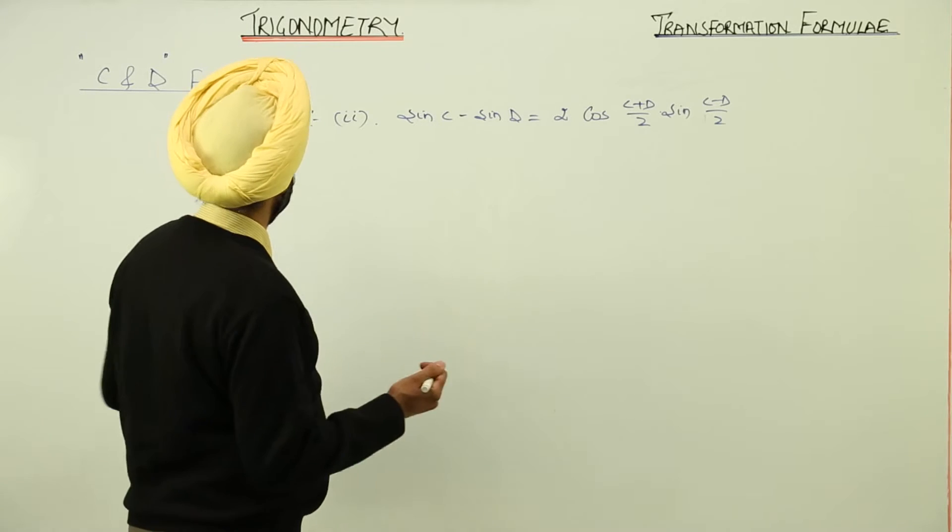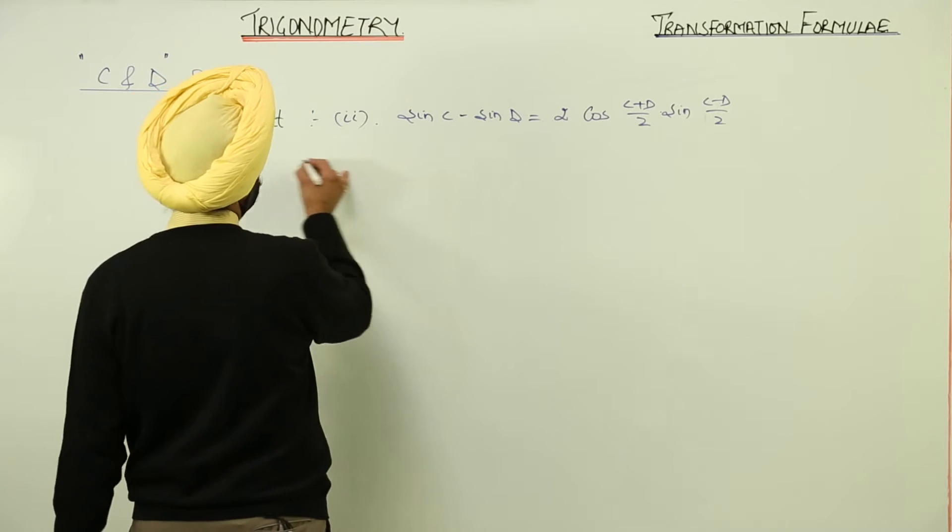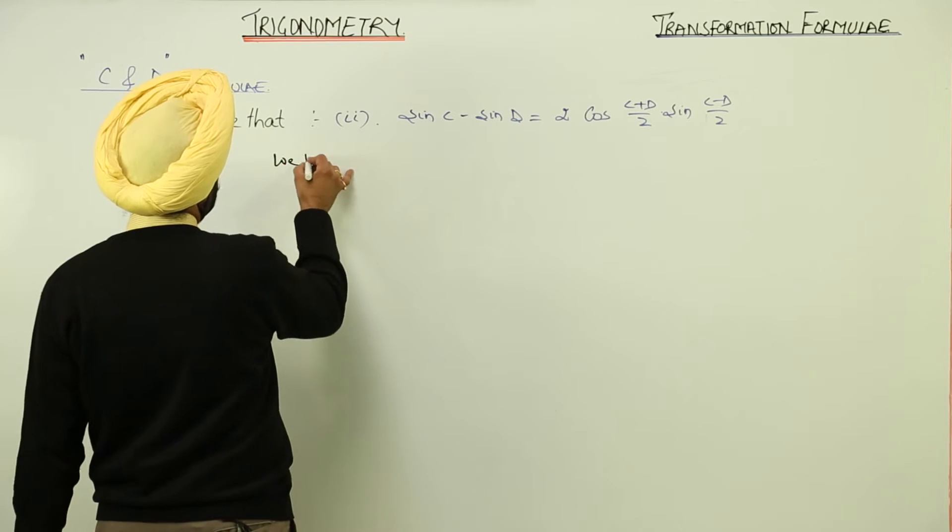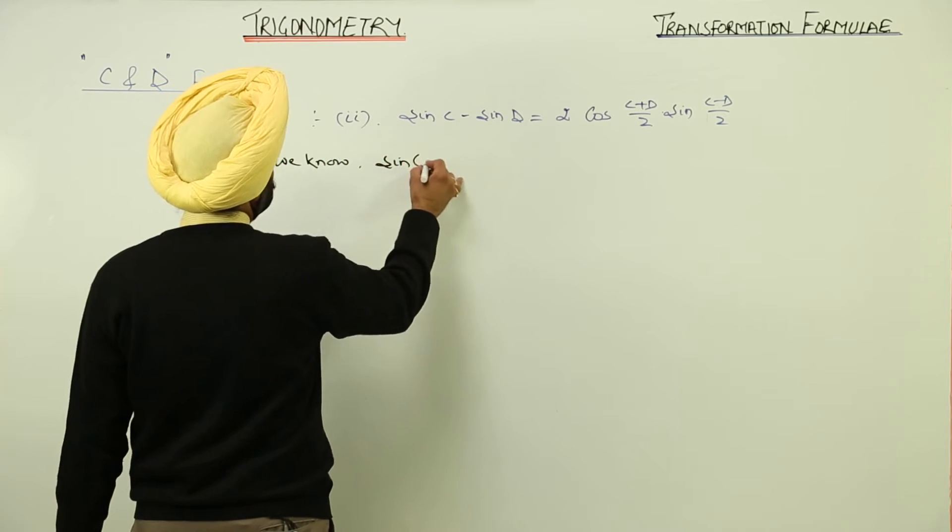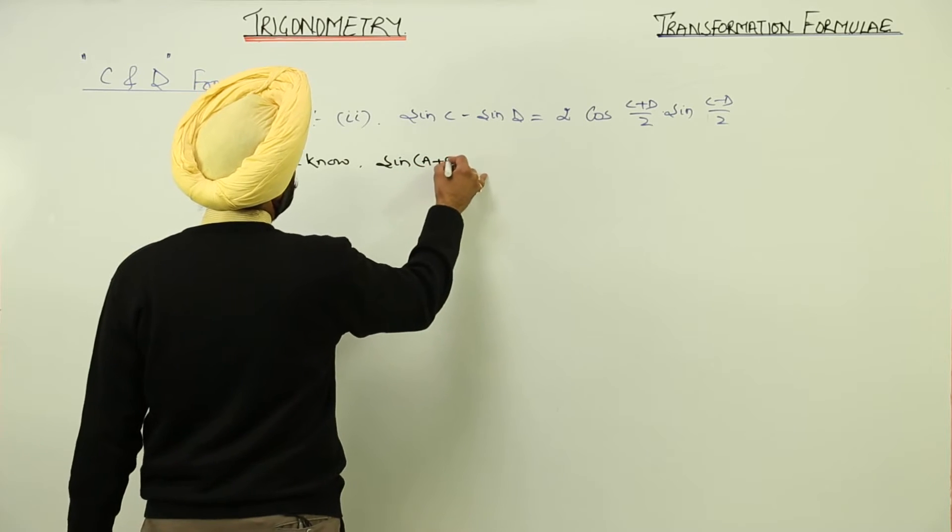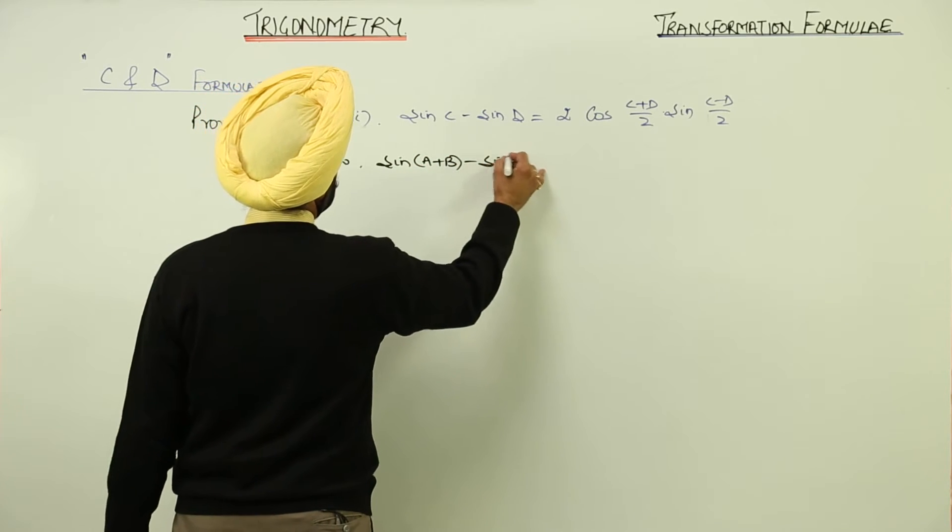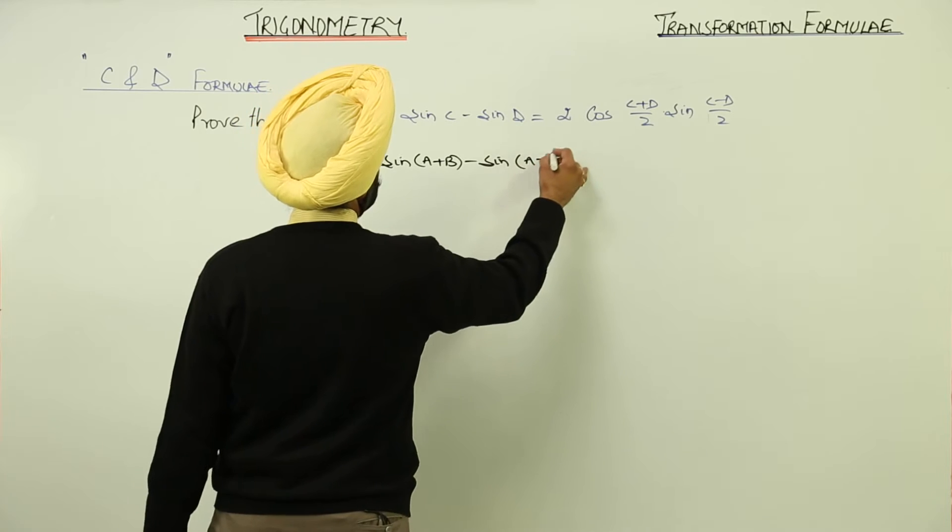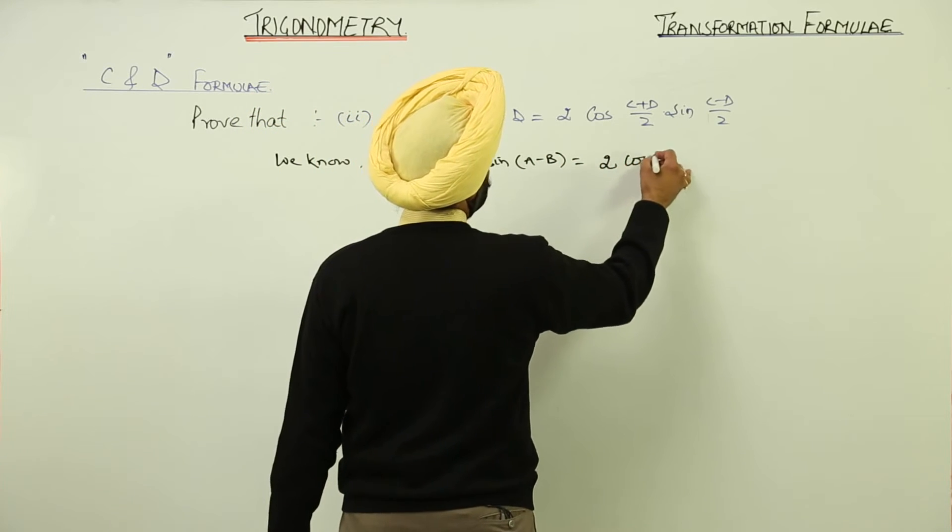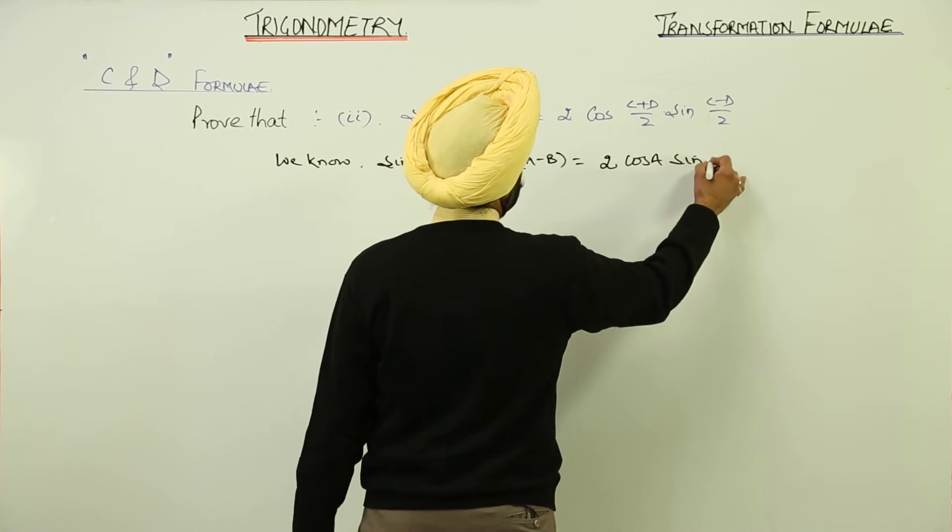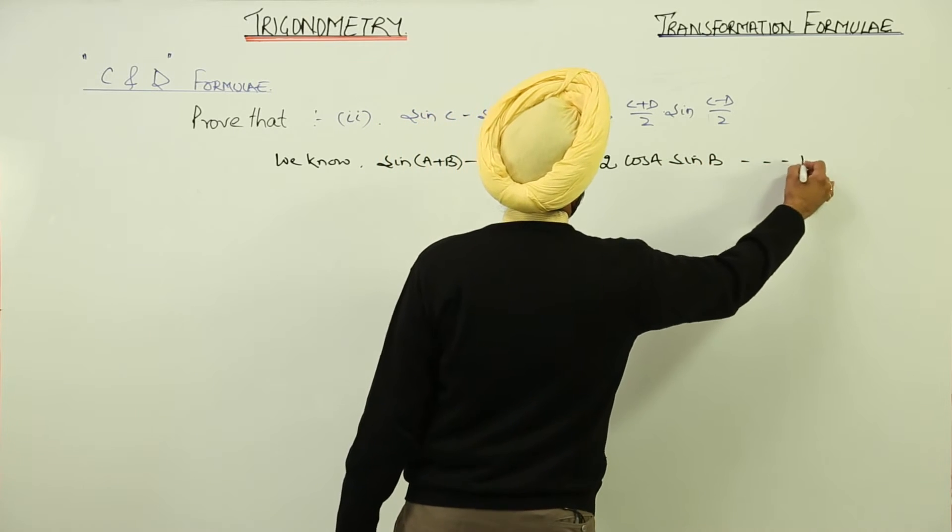Now the second formula for C and D. We know sin(A+B) - sin(A-B) = 2cos(A)sin(B), equation number 1.